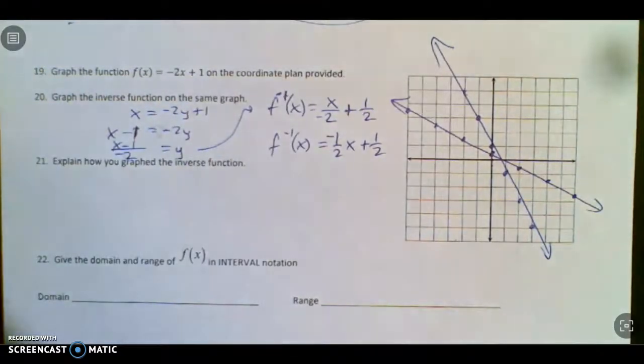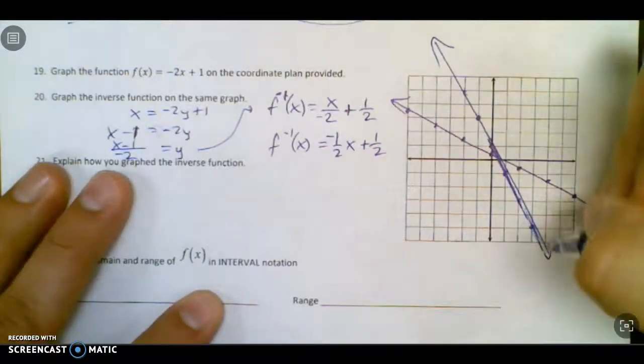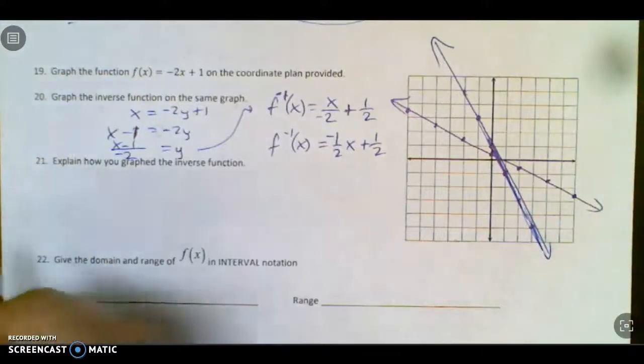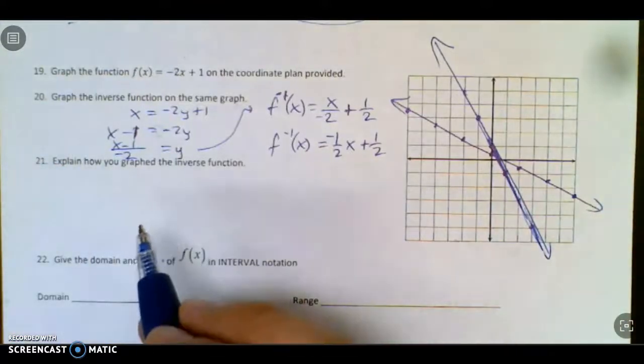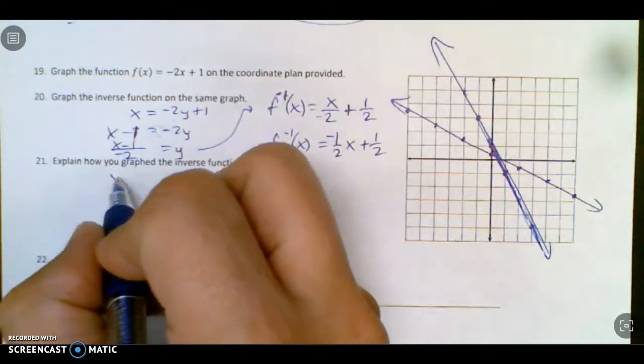So let's see what else here. My graph's not perfect. I missed my line here. There it goes. So now I'll explain how I graphed it. Oh, I could have just switched the x and y points. I don't know why I didn't do that. Shoot.